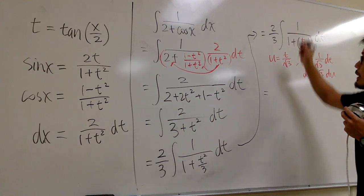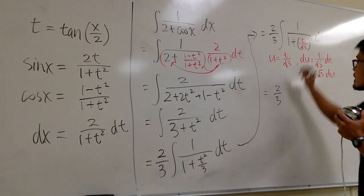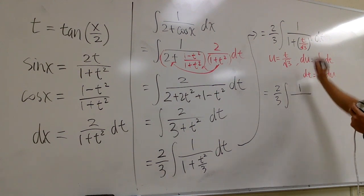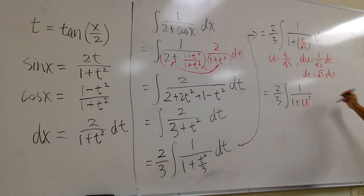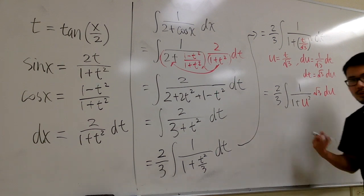And then, this is equal to 2 over 3, integral 1 over 1 plus. Inside is the u, and then we have that square. And then the dt is this, square root of 3, du.